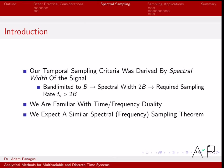Essentially, the Nyquist criterion lets us take a continuous time signal, sample it in time — write down a list of numbers — and then perfectly reconstruct the continuous time signal from those samples. In this video we're going to do something similar, but we're going to talk about sampling in the frequency domain. Since we're familiar with properties of the Fourier transform and how things in time and frequency are often similar, it shouldn't be too surprising that we can come up with a frequency domain sampling theorem.